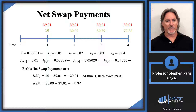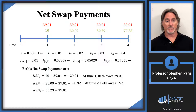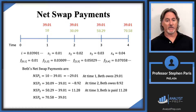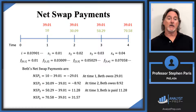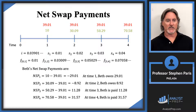The difference at time two is negative $8.92 — Beth owes $8.92. At time three, Beth receives $50.29 and pays $39.01, so she nets a positive $11.28. Then at time four, Beth receives $70.58 and pays $39.01, for a net payment of $31.57 received. Those are the net swap payments.